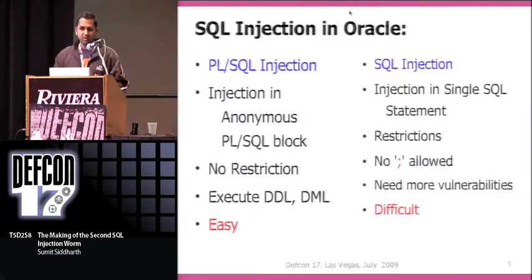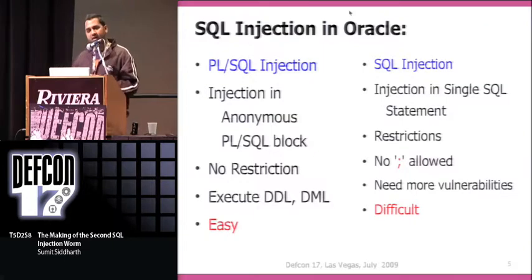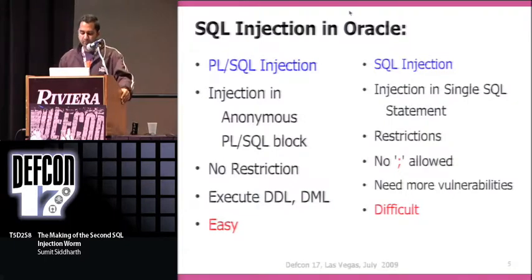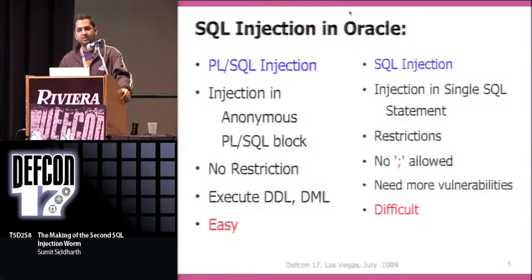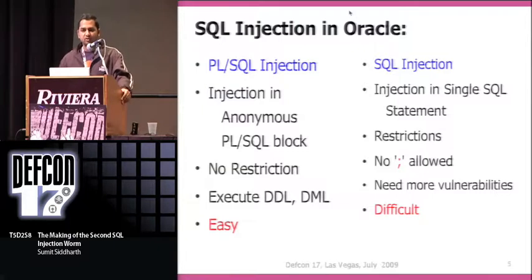If you have a PL/SQL injection, things are quite straightforward. It is more or less like having SQL Plus access to an Oracle backend, where you can just copy-paste or throw queries at it and they will get executed. Things get more difficult when you encounter SQL injection in a single SQL statement like a select query. That's because Oracle by design does not support semicolons in single SQL statements, so you cannot end the query and do something like create function. But with PL/SQL injection, you can execute DML or DDL statements and use autonomous transactions to commit changes.